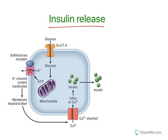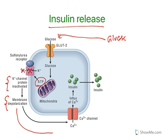Insulin release occurs whenever we take food. When glucose from food reaches the pancreatic gland, glucose enters the cell and synthesizes ATP. That ATP inhibits a potassium channel. When the potassium channel is inhibited, it results in membrane depolarization, which activates the calcium channel. The influx of calcium is what triggers insulin release. So the major stimulus to release insulin is glucose.